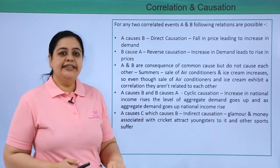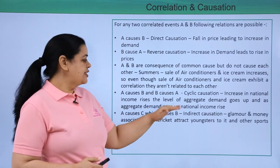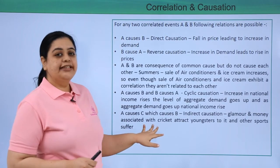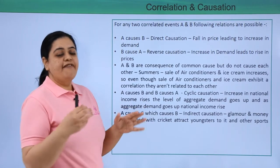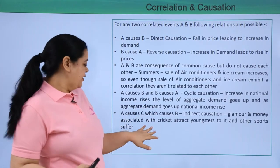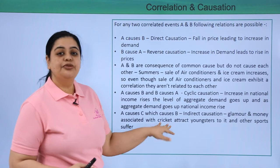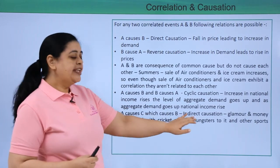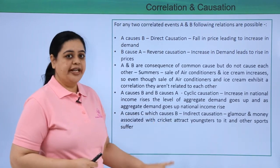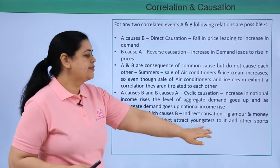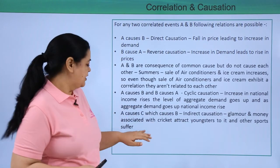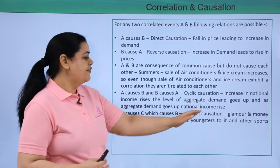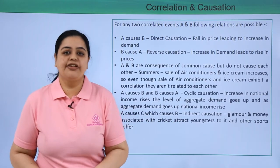Next is A causes C which causes B — that is indirect causation. For example, there is a lot of glamour and money in a sport like cricket, so many youngsters are attracted to cricket, and hence other sports suffer. That is an example of indirect causation.